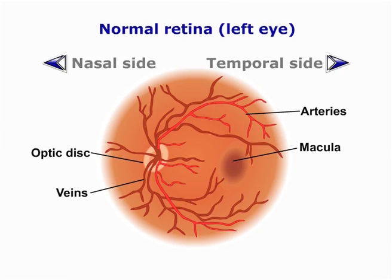With the ophthalmoscope you can examine many features, but of particular importance is the posterior part of the eye, or the fundus. It includes the retina, the optic disc, the macula and fovea, the choroid layer and blood vessels.